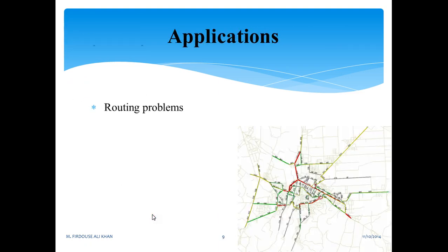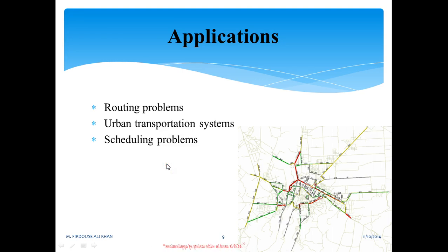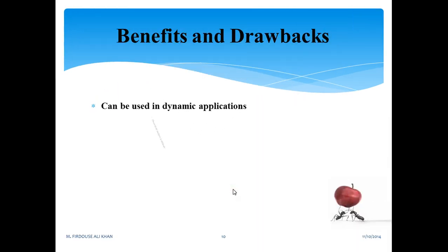There are few applications: routing problems, urban transportation systems, scheduling problems. You can see a mesh-like thing over here. Now suppose my transmitter or my source is here and my destination is here. In order to reach from source to destination there are so many paths that exist, but I want to find out the shortest path. I can use this ACO to find the shortest path between this and this. ACO is used in a wide variety of applications. It is used in networking, smart grid, routing problems. Whatever comes under routing concept, whether it's communication, electrical, electronics, ACO is widely used.